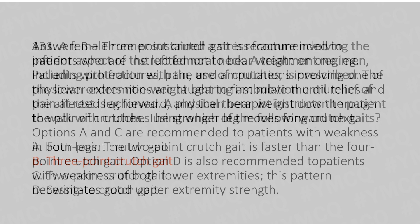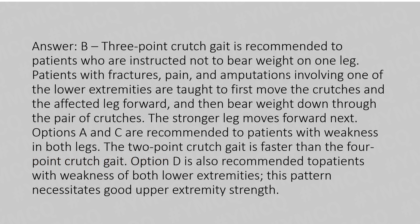The 3-point crutch gait is recommended for patients who are instructed not to bear weight on one leg. Patients with fractures, pain, and amputation involving one lower extremity are taught to first move the crutches and the affected leg forward, then bear weight down through the pair of crutches, and then the strong leg moves forward next. Options A and C are recommended for patients with weakness in both legs; the 2-point gait is faster than the 4-point gait. Option D is also recommended for weakness in both lower extremities and necessitates good upper extremity strength.